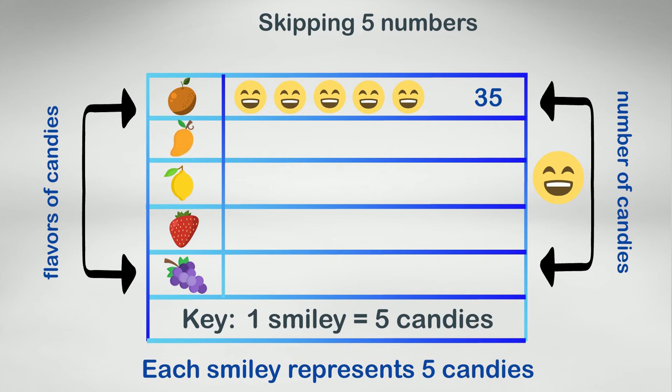Let's count mango flavored candies using the skip count method again. Five, ten, fifteen, twenty. So there are 20 mango candies.